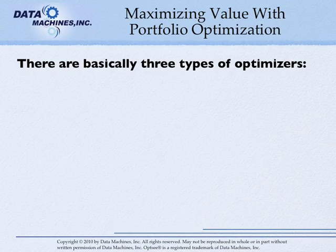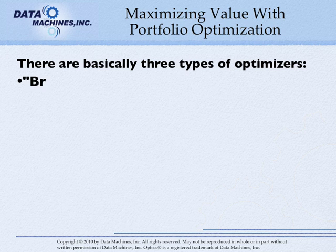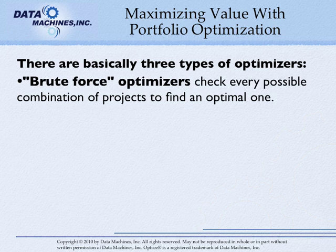What should you look for in an optimizer? There are three basic types of optimizers. Brute-force optimizers check every possible combination of projects to find an optimal one. These work well for small portfolios, but rapidly become far too time-consuming for larger portfolios.